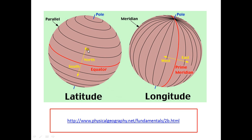Looking at this image of the Earth, this is the equator at zero degrees. If we go from here up to the pole, these are the latitudes. If we go to the south, those are also latitudes — all parallel lines. This is the prime meridian, located in Greenwich, England. Going west gives west longitude, and going east gives east longitude. This is the pole.